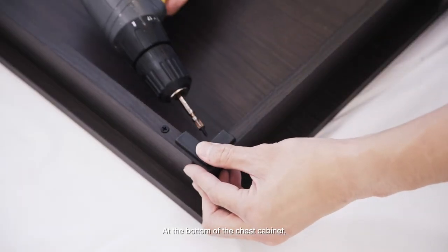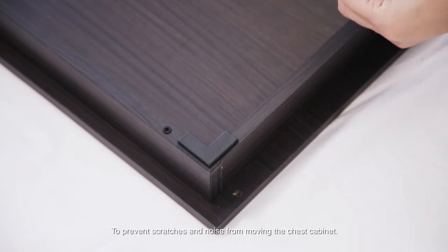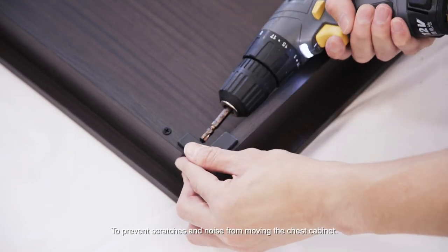At the bottom of the chest cabinet, there are four L-shaped PVC legs at each corner to prevent scratches and noise from moving the chest cabinet.